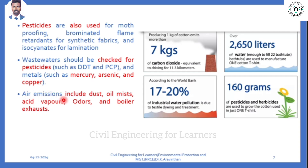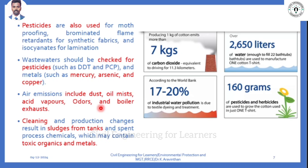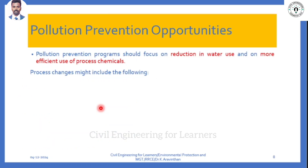Some air emissions are also present, which include oil mist, acid vapour, odour, and boiler exhaust. These are the wastes the textile industry produces. This comes under waste audit - when doing an audit, you should check these parameter limits. The next topic is pollution prevention.